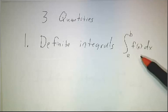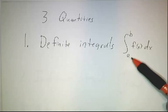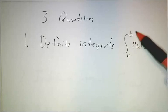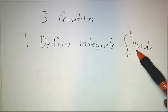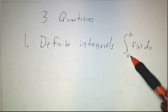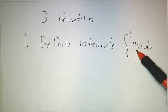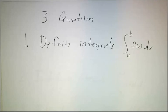That's the total amount of stuff described by a function f between a and b. So if f is the height of a curve, this integral is the area under the curve between a and b. If it's a velocity, it's a distance traveled between a and b. It's a total amount of stuff.